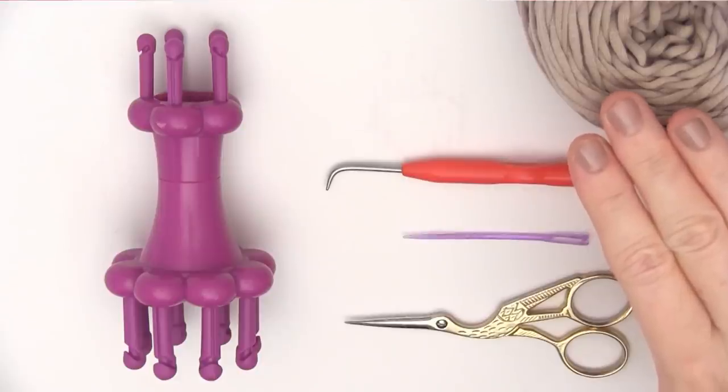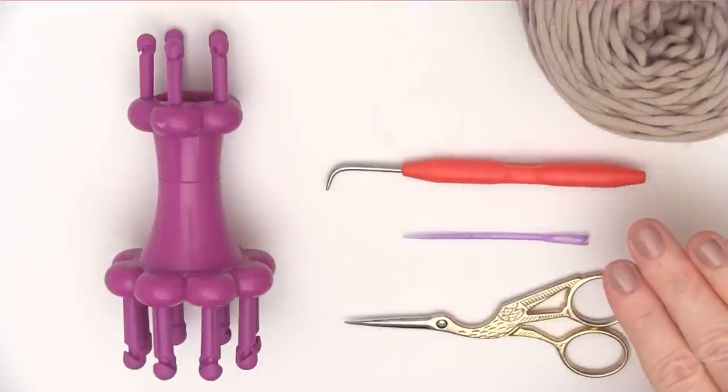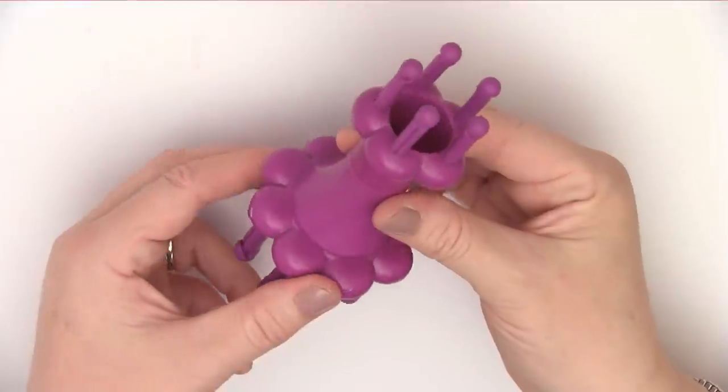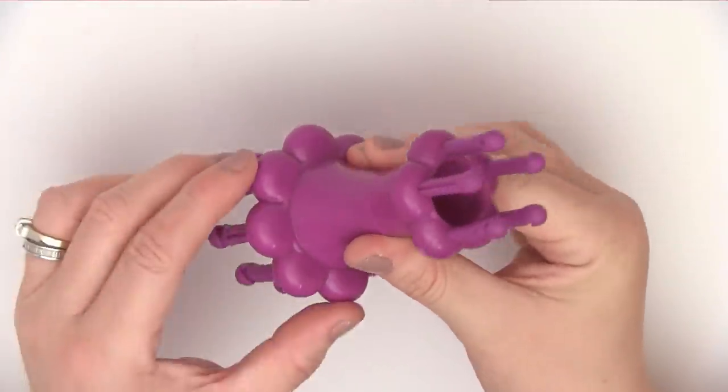So for our materials, we are using yarn in any weight. Mine here is bulky. And a spool loom device. It includes a loom hook and a tapestry needle. And we're using some scissors too. I have a link in the description below on where you can purchase this exact Jumbo Spool Knitter by Boy Online.